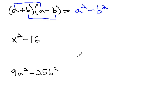So, for example, we would notice in the problem x squared minus 16, we can take the square roots of both terms. The square root of x squared is just x, and the square root of 16 is 4.